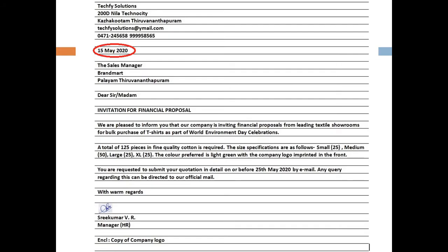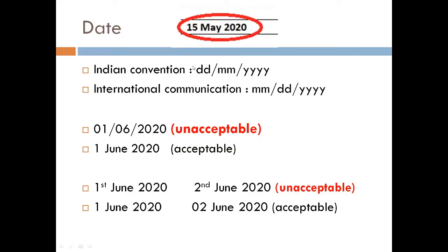The next element is the date line. After giving a line space, you can include the date. In the Indian context, we use the day-month-year format. However, in international communication, a month-day-year format is also followed.